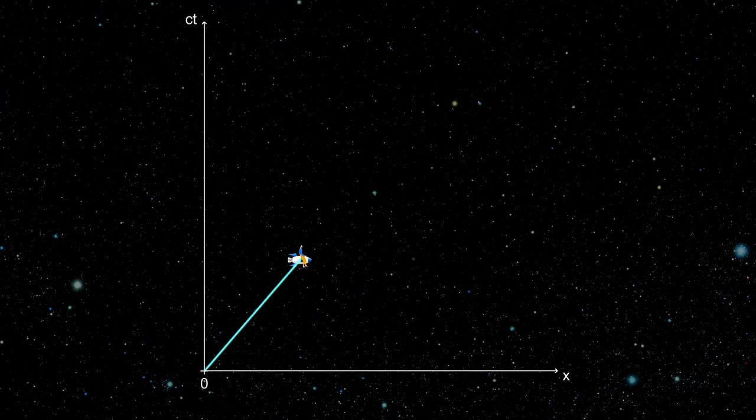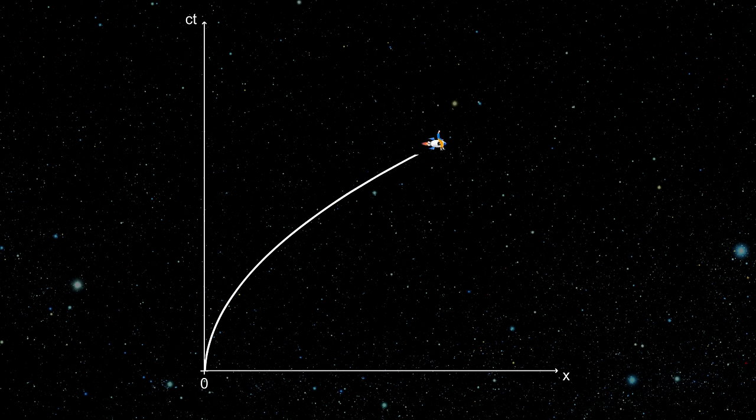Let's take a look at the space-time diagram again. An inertial observer will always have a straight world line. An observer with a constant proper acceleration will have a curved world line. If we limit ourselves to just Newtonian physics, accelerated observer would follow a parabola curve in the space-time diagram.